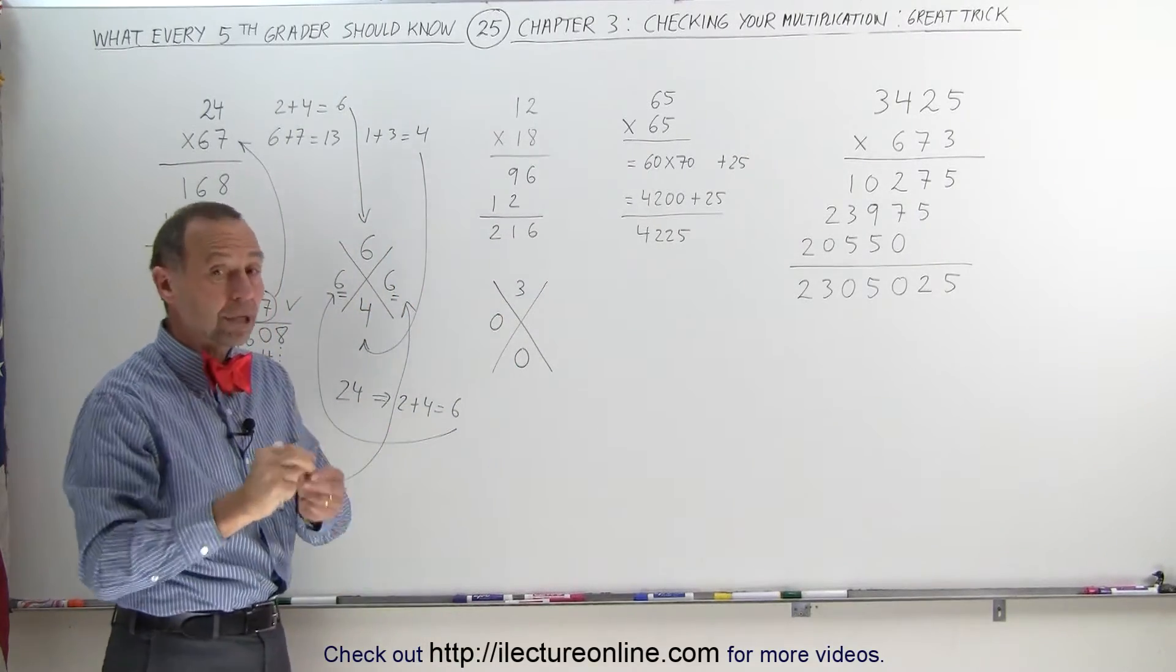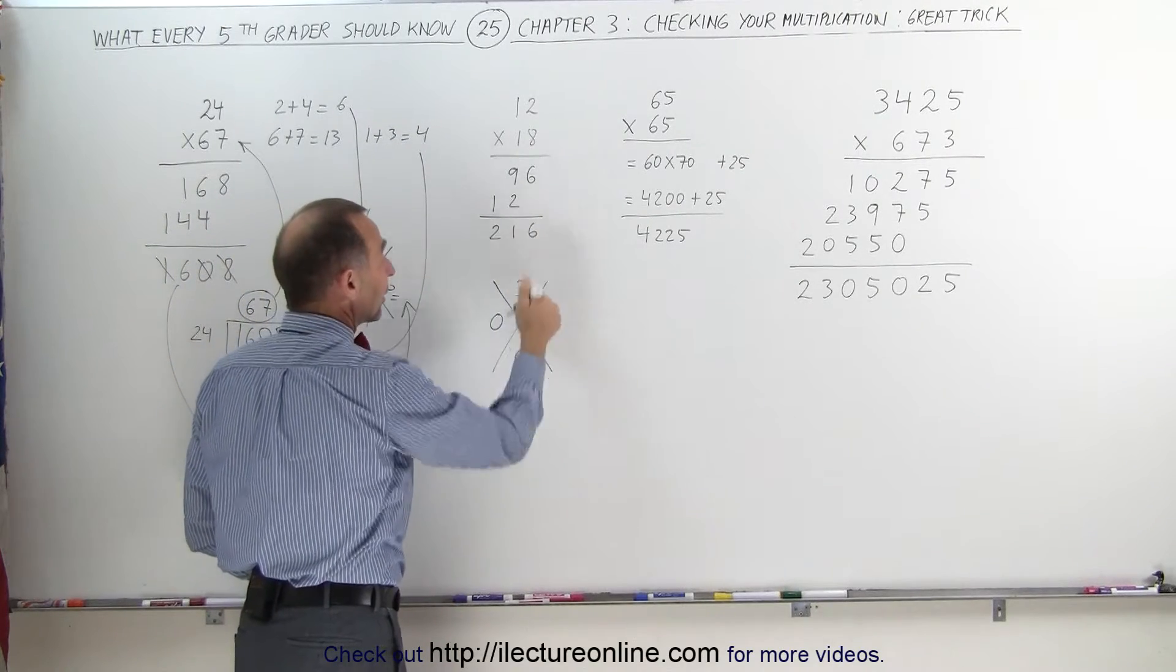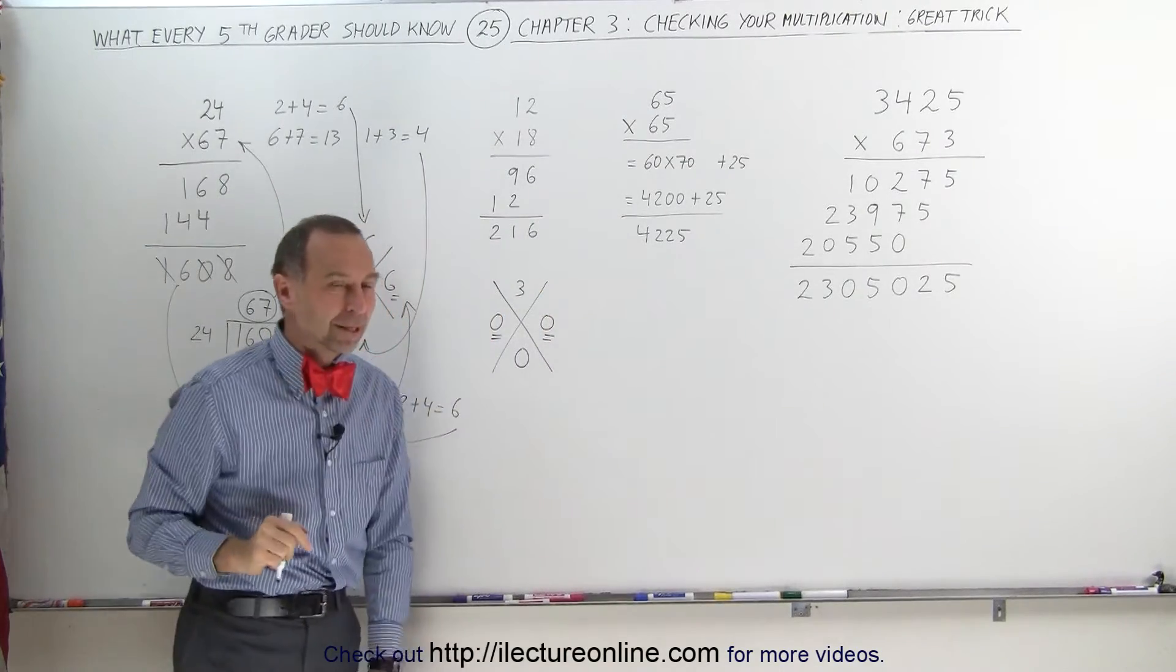But again, if it's a 9, that becomes a 0. 2 plus 1 is 3, plus 6 is 9. 9 becomes a 0. Write a 0. These two numbers are the same. Our answer is probably correct.